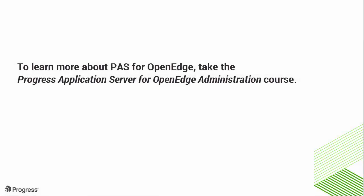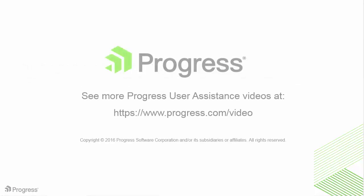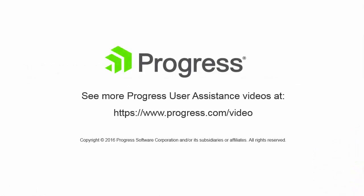You have now seen how to deploy ABL, SOAP, and REST applications to a Progress Application Server for OpenEdge production instance. To learn more about Progress Application Server for OpenEdge Administration, take the Progress Application Server for OpenEdge Administration course.